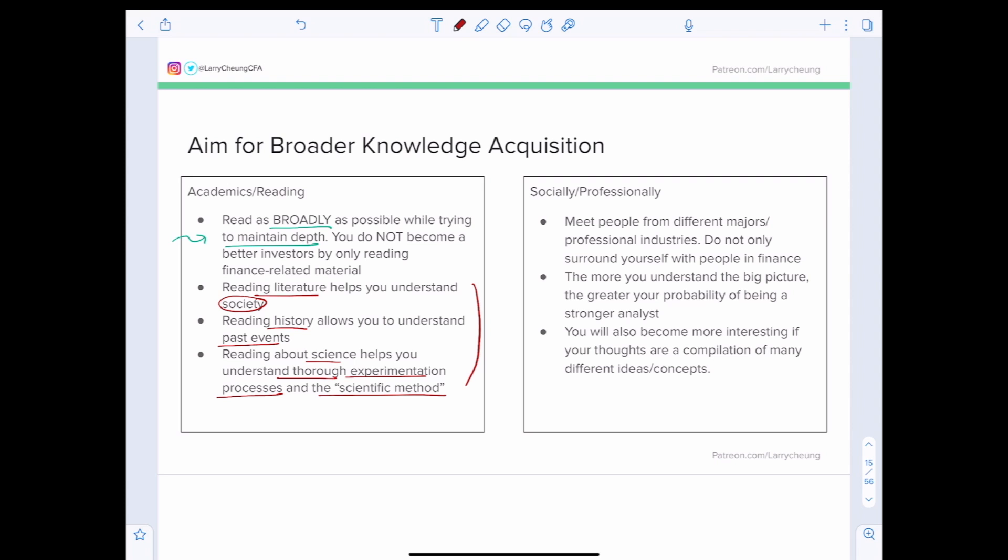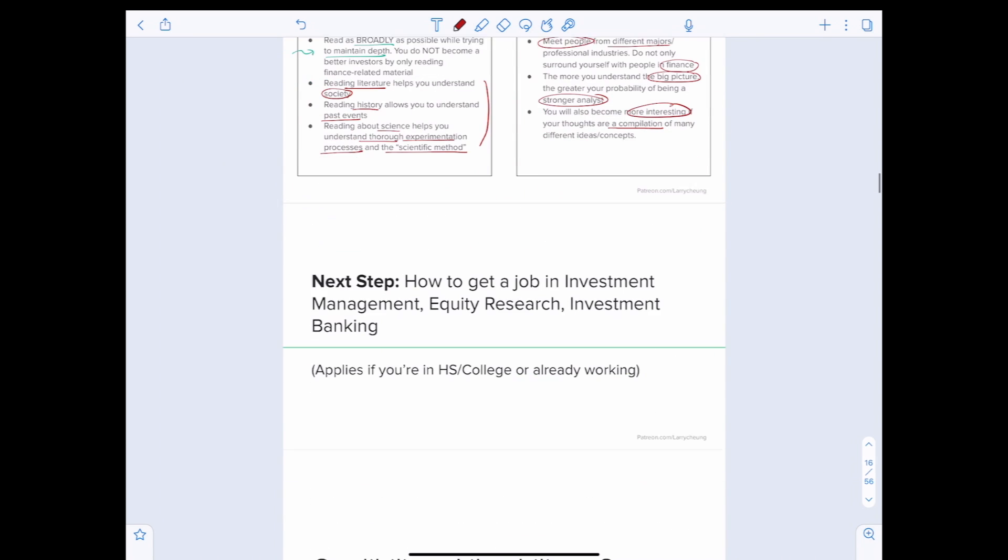From a social and professional standpoint, I would heavily encourage you to meet people from different majors, from different industries. Don't only surround yourself with people in finance, because the more you understand other industries, other areas of the economy, the more you understand the big picture, and that makes you a better analyst. The best part is you become a more interesting person because your thoughts and your ideas are a compilation of many different concepts.